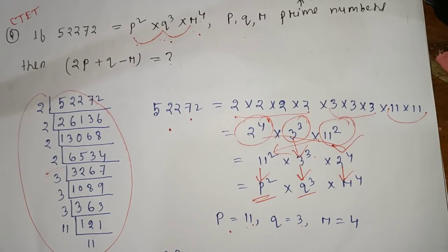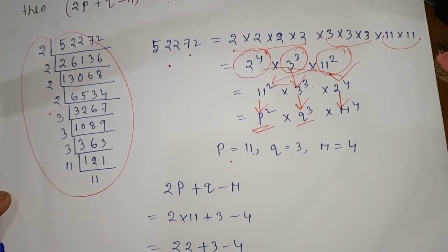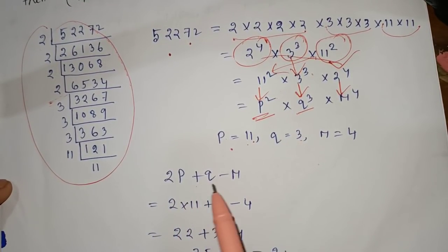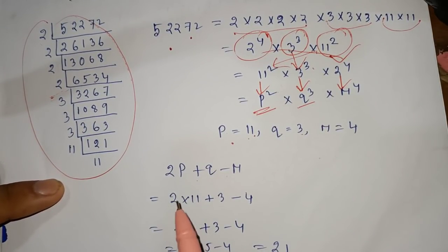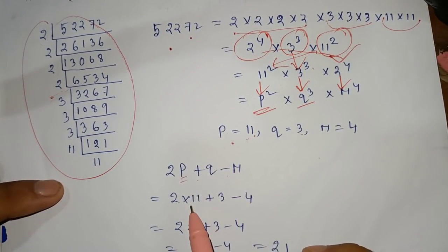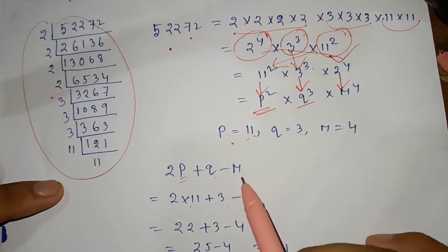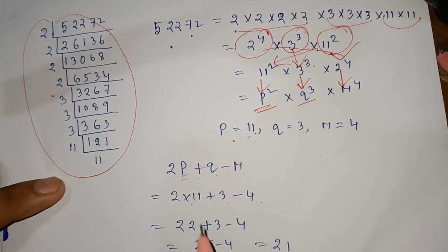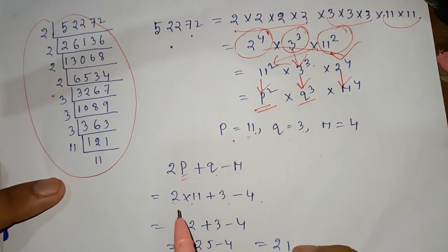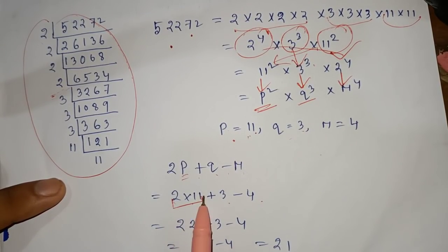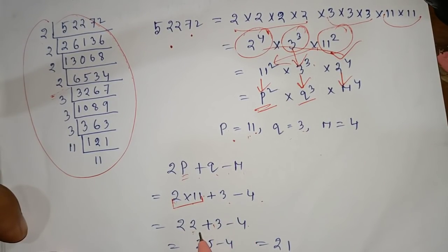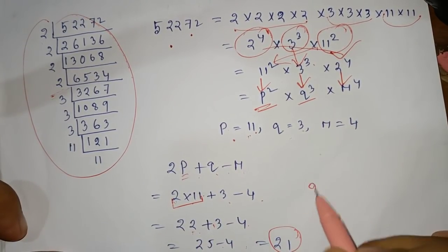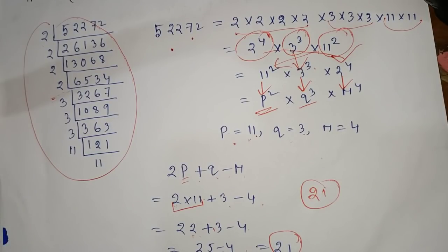So p square into q cube into r to the power 4 — this is clear. The problem asks for 2p plus q minus r. Putting in values: p means 11, q means 3, and r means 2. So 11 into 2 equals 22, plus 3 minus 4. That gives 25 minus 4, which equals 21. The answer is 21.